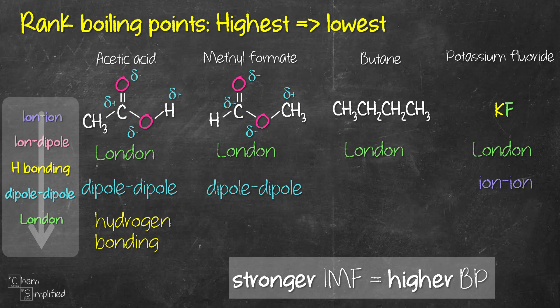Looking at acetic acid, it has London, dipole-dipole, and hydrogen bonding. So the strongest IMF in acetic acid is going to be hydrogen bonding. For methyl formate, it's going to be dipole-dipole. For butane, there's only one, so that's London. And for potassium fluoride, we have two, and ion-ion is way stronger than London. So there we go.